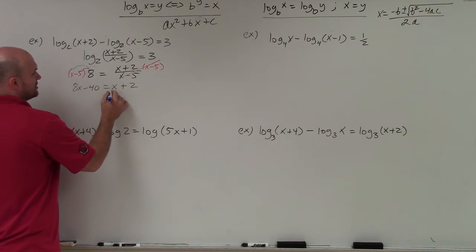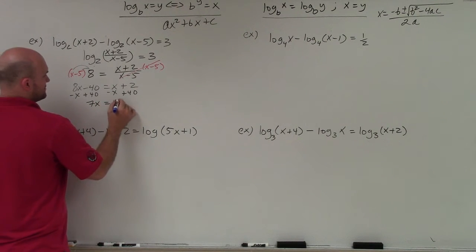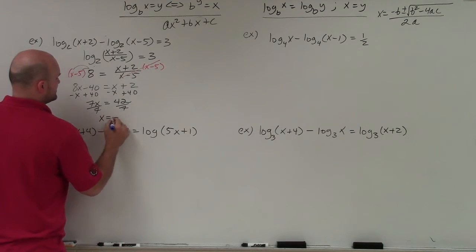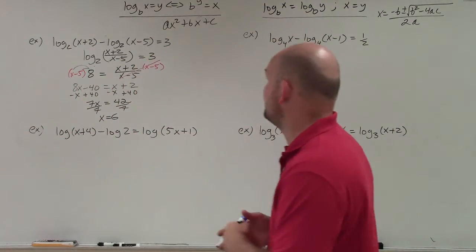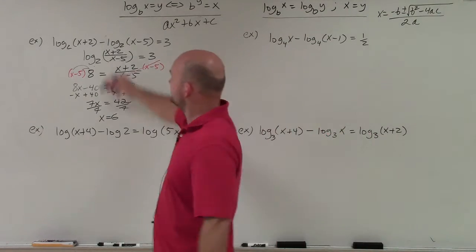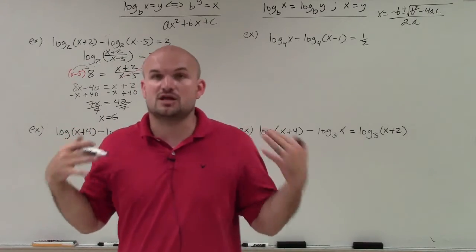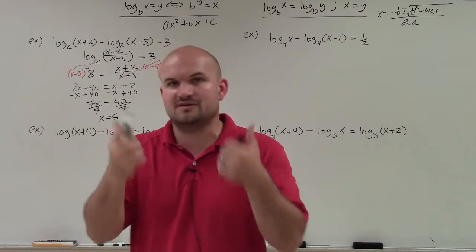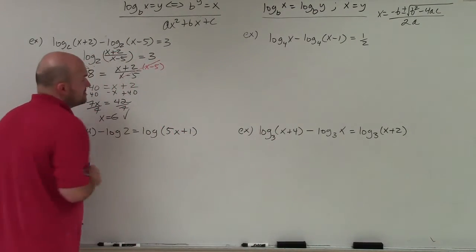Now I can go ahead and solve. So I get the x by themselves. And let's see. I get 7x equals 42 divided by 7 divided by 7. x equals 6. So therefore, I have one solution. I just want to make sure though I go back and check it to make sure it's not extraneous. So when I plug 6 in for x, I get 8, which works. When I plug 6 in for x over there, I get 1. Remember, as long as you plug them in, as long as it doesn't make the value of the log negative, you're good to go. So that works.